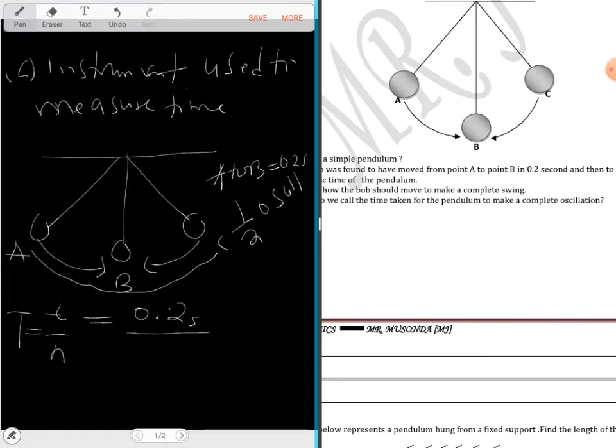Let's find the answer and see the period. So 0.2 divided by 0.5 we get 0.4 seconds.